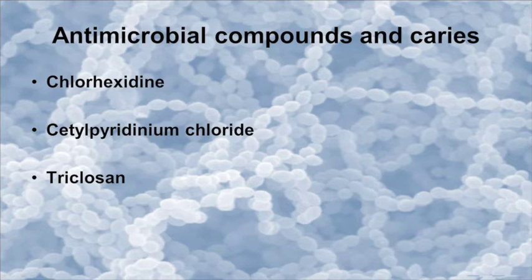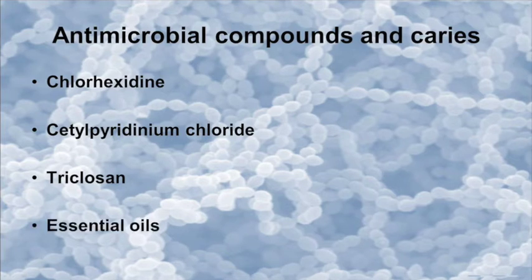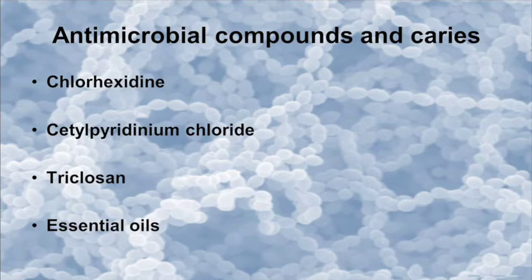Triclosan is a bisphenol with an antimicrobial effect. The substantivity of triclosan itself in the oral cavity is low, so it is widely used in combination with a copolymer. A recent Cochrane review reported that a fluoride-containing toothpaste with triclosan led to a small reduction in coronal caries compared to control; however, the evidence is based on four studies only. Essential oils are extracts from plant material in a solvent, widely used because of their antibacterial properties and broad antibacterial effect. A systematic review reported that use of essential oils as an adjuvant to mechanical cleaning reduced the amount of biofilm; however, there is lack of conclusive evidence for the caries preventive effect of essential oils.